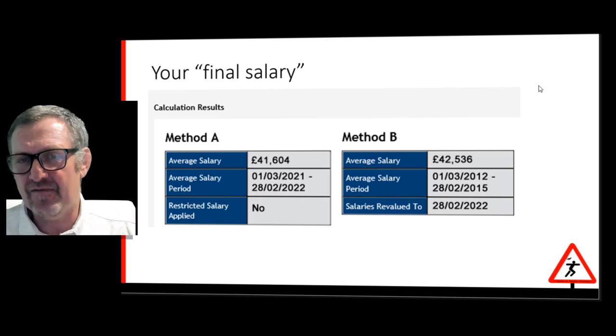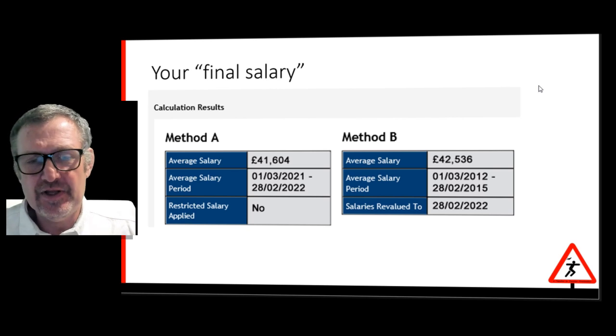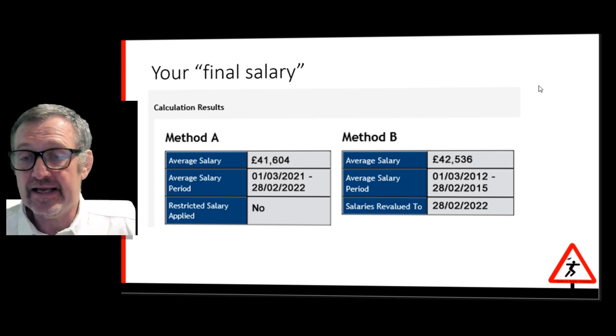So it normally doesn't change until August when we get a pay rise. Method B, however, is always having inflation added to it. So these salaries were done in February.